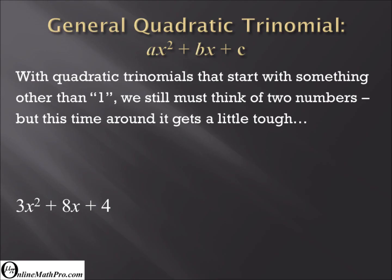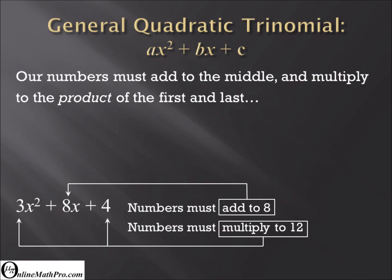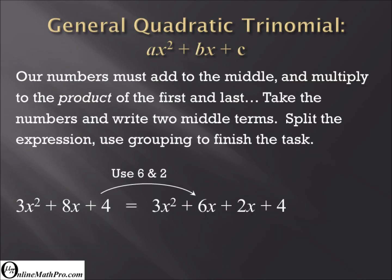With quadratic trinomials that start with something other than one, we still must think of two numbers, but this time around it gets a little tougher. Our numbers must add to the middle and multiply to the product of the first and last. Split the middle term and the expression needs grouping to finish the task.